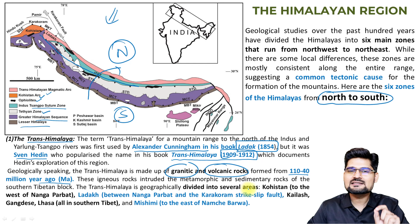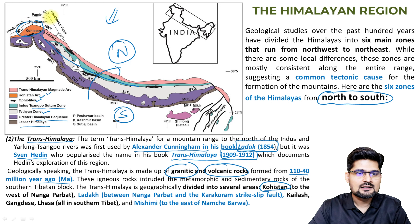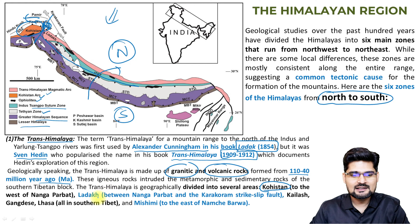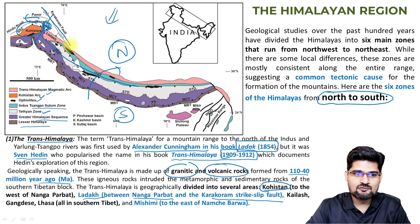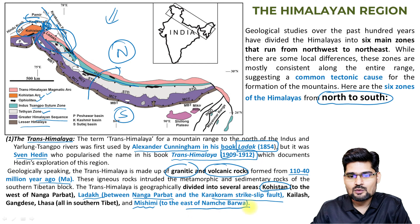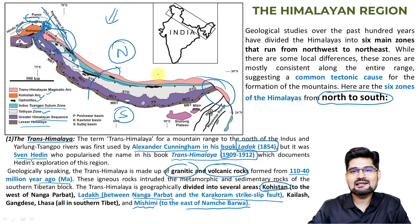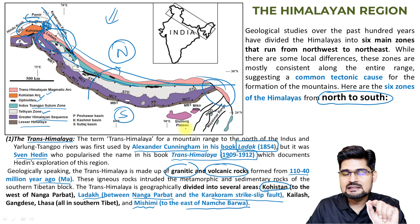Trans-Himalaya is divided into several areas. Kohistan is to the west of Nanga Parbat. Ladakh lies between Nanga Parbat and the Karakoram Strike-Slip Fault. Mishmi is to the east of Namcha Barwa. This entire Trans-Himalayan sequence should be drawn and practiced in your diagrams.